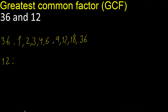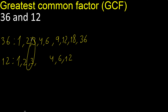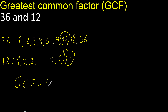Factors always start with 1. 12 divided by 1 is 12. Next, divided by 2 is 6. Divided by 3 is 4. Next, 4 is here. The factors match. 12 is the largest common factor, therefore 12.